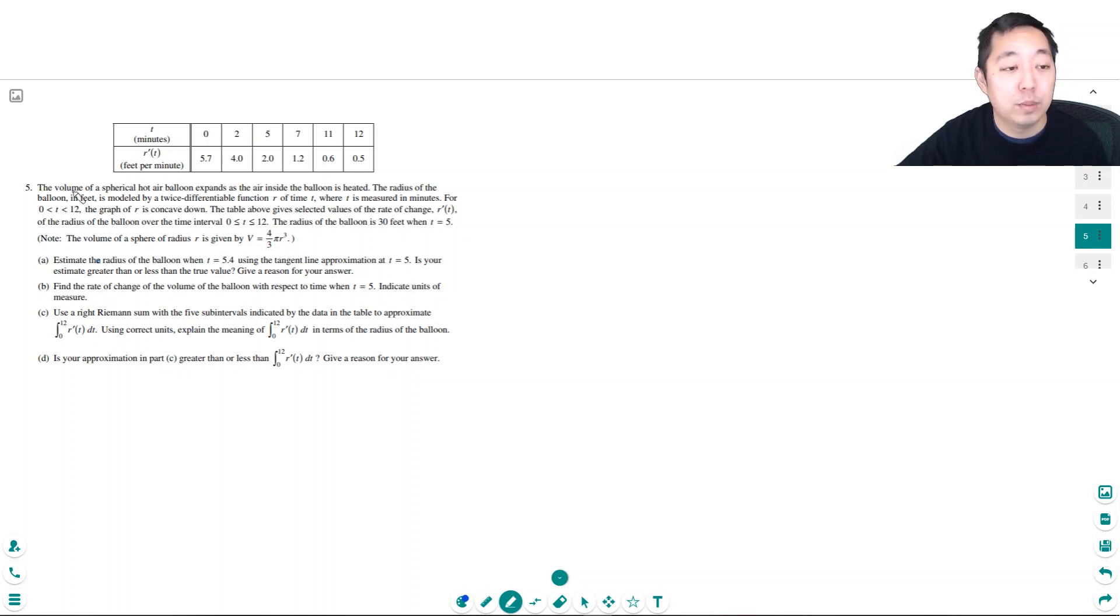This is the non-calculator portion. The volume of a spherical hot air balloon expands as the air inside the balloon is heated. The radius of the balloon in feet is modeled by a twice differentiable function r of time t, where t is measured in minutes. For t between 0 and 12, the graph of r is concave down. The table gives selected values of the rate of change of the radius over the interval.